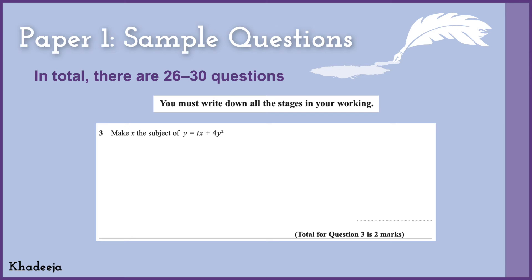In total for Paper One there are 26 to 30 questions. You have to be really quick in answering Paper One because you have only 90 minutes and a lot more questions — around 26 to 30 — each ranging from around two to seven marks. The speed requirement is significant.